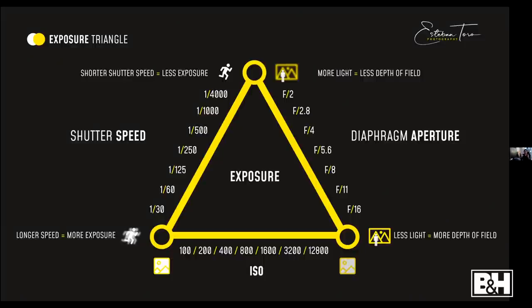Let me share my screen. This is where we ended last time — exposure, the triangle. I want to go back to this to refresh what we talked about. No matter if you're using your cell phone, your DSLR, or your mirrorless camera, you're based on three things: shutter speed, aperture, and ISO. If you know and understand that these three settings change the whole exposure — how light is exposed in your picture — then you're on the right track.